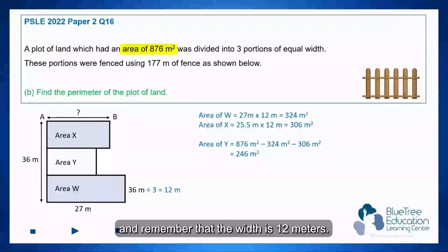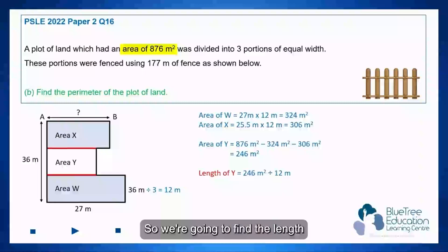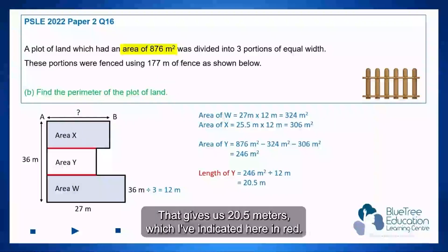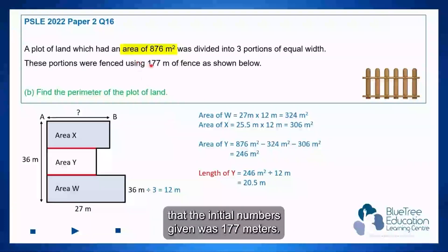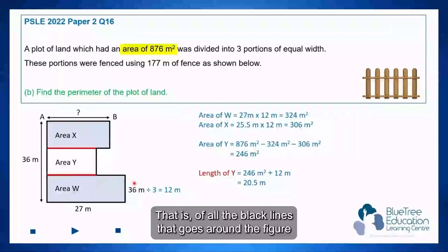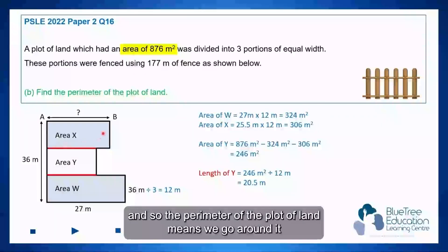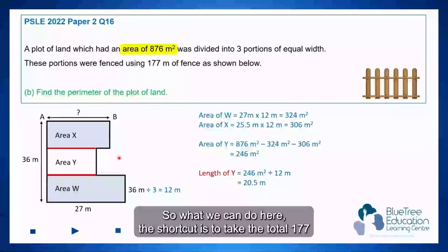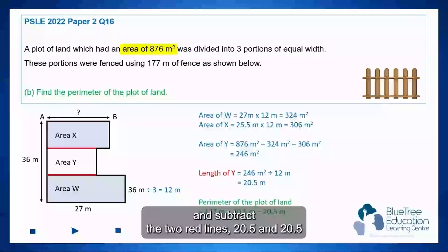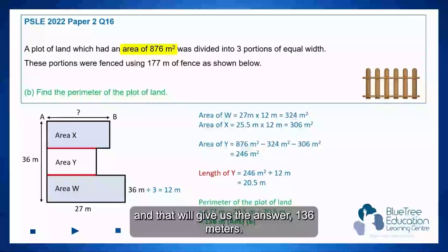The width is 12 meters, so we find the length by taking 246 divided by 12, which gives us 20.5 meters, indicated here in red. To find the perimeter of the plot of land, recall the initial number given was 177 meters — that's all the black lines going around the figure. The perimeter means we go around it without including the lines in the middle. So the shortcut is to take 177 and subtract the two red lines — 20.5 and 20.5 — giving us the answer 136 meters. Do you get this correct?